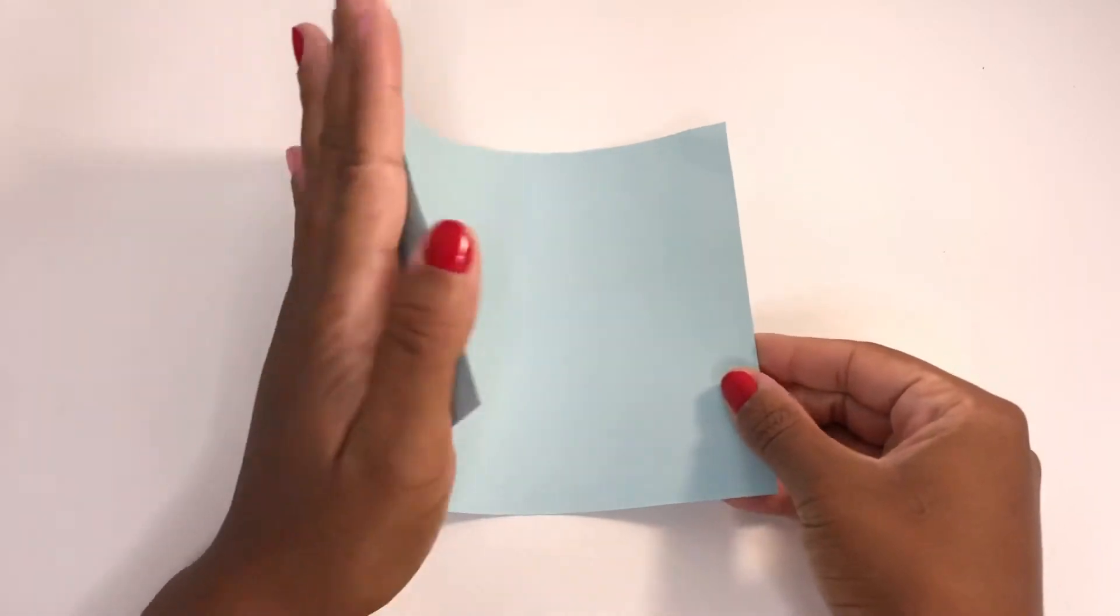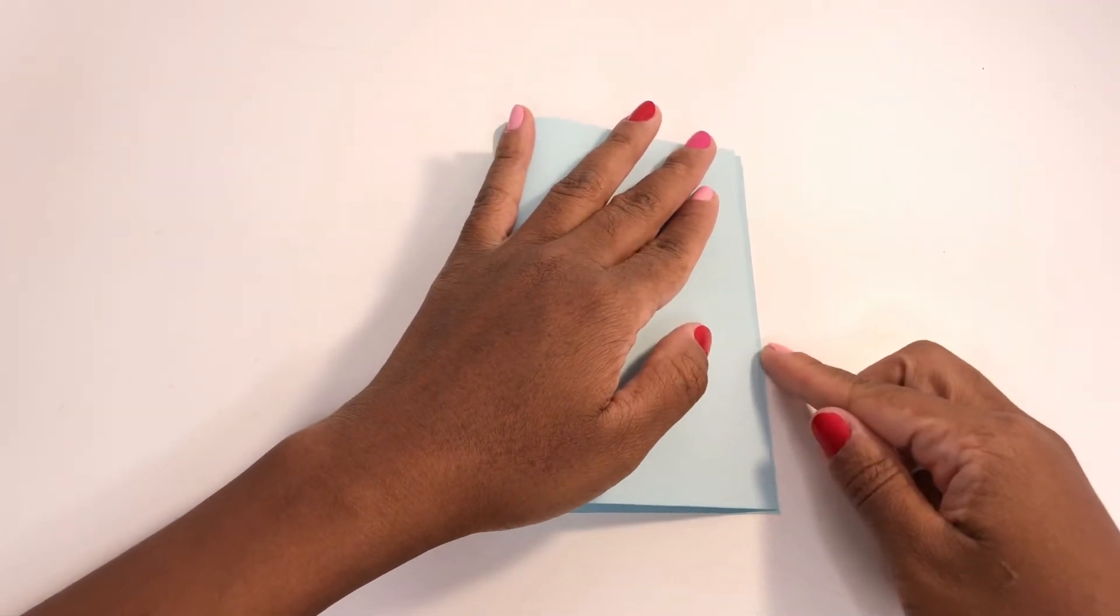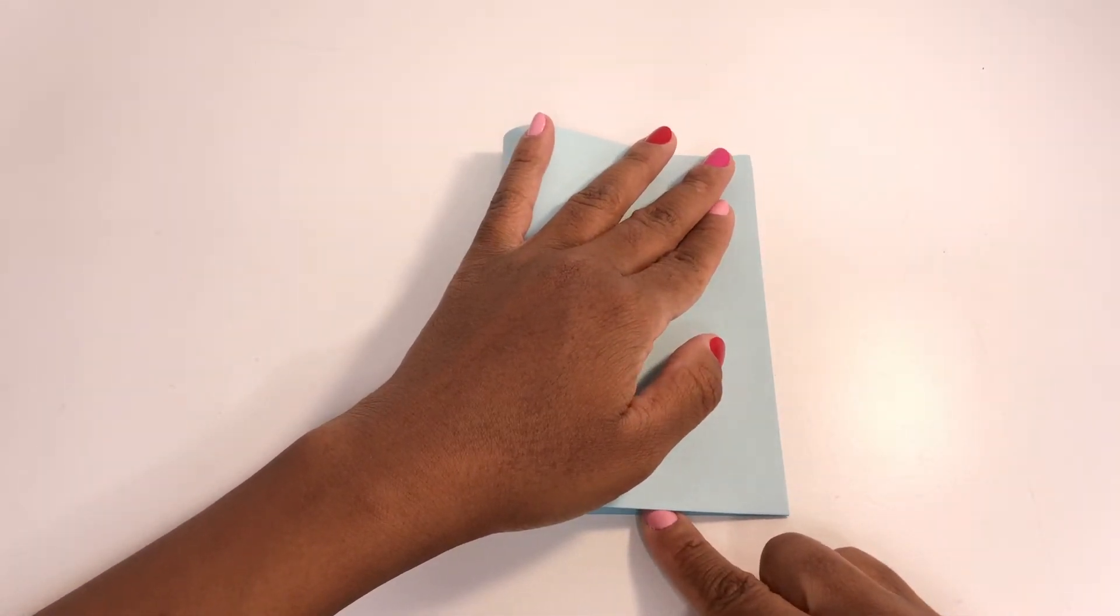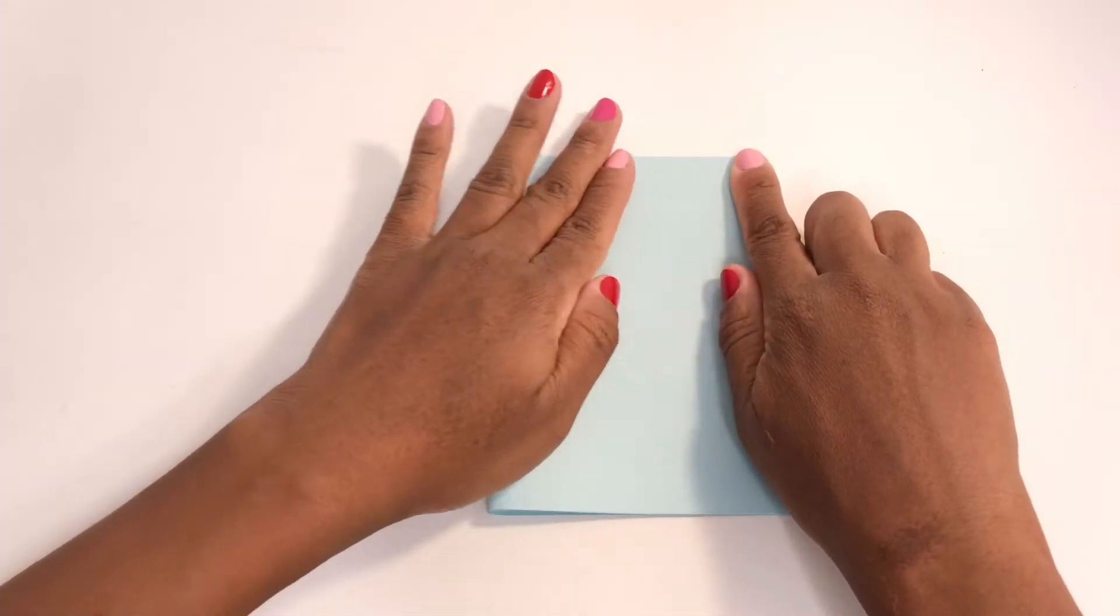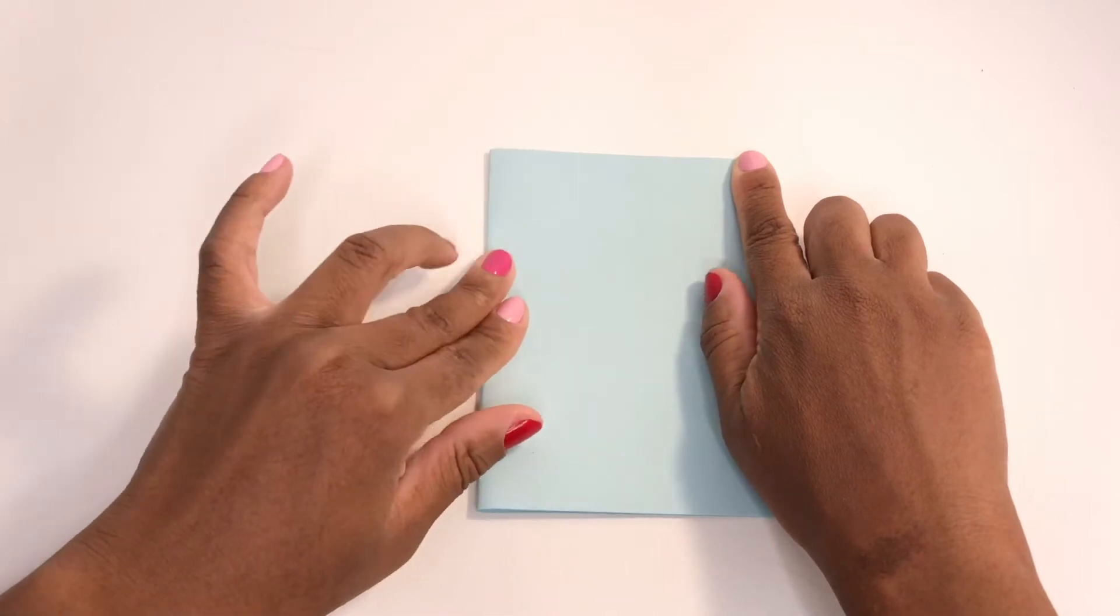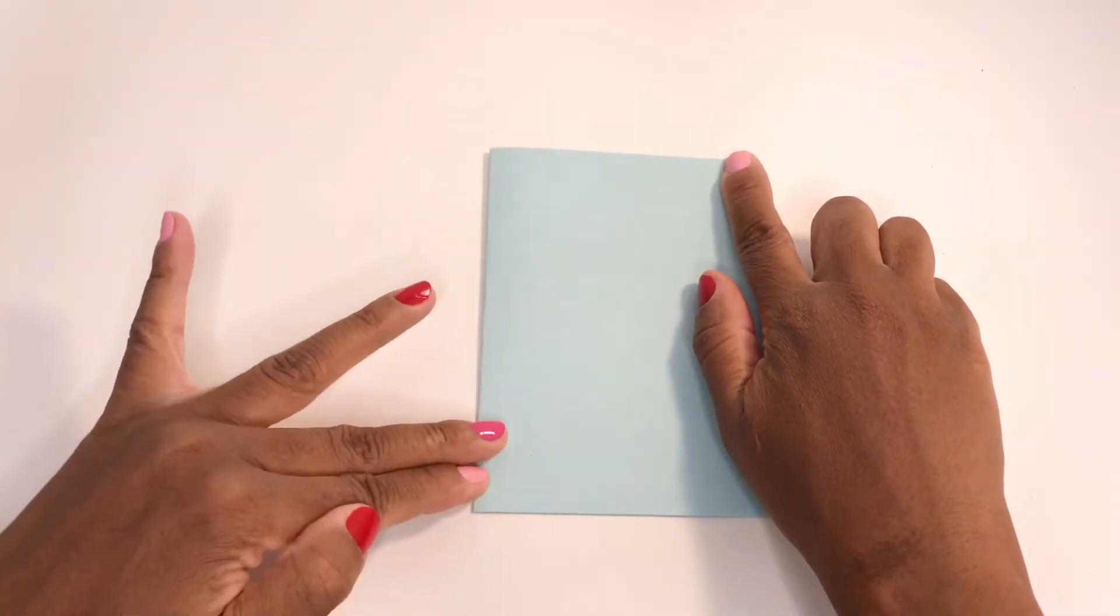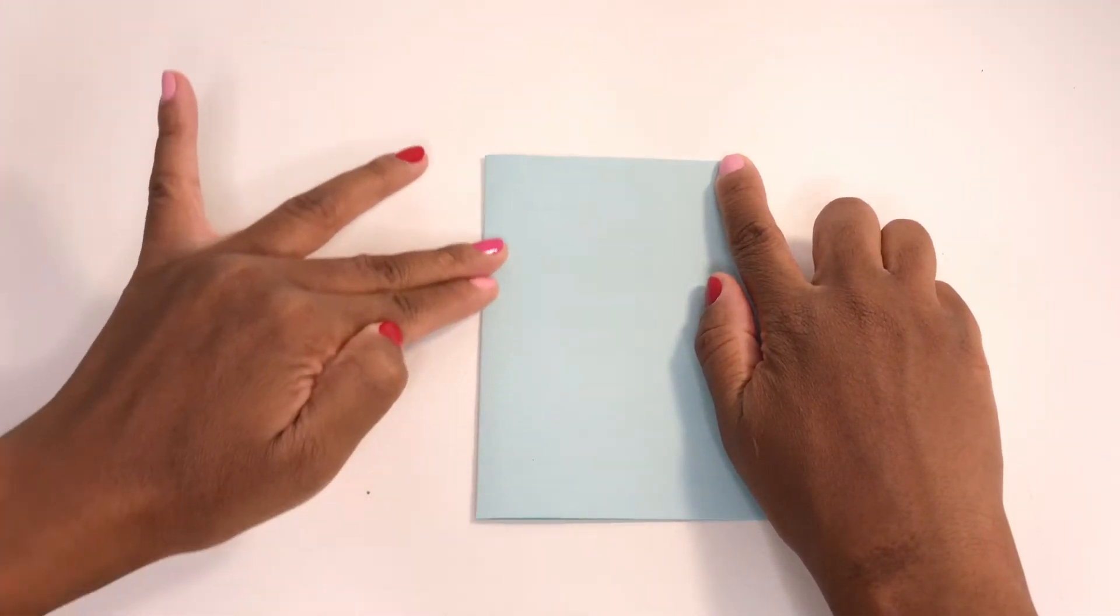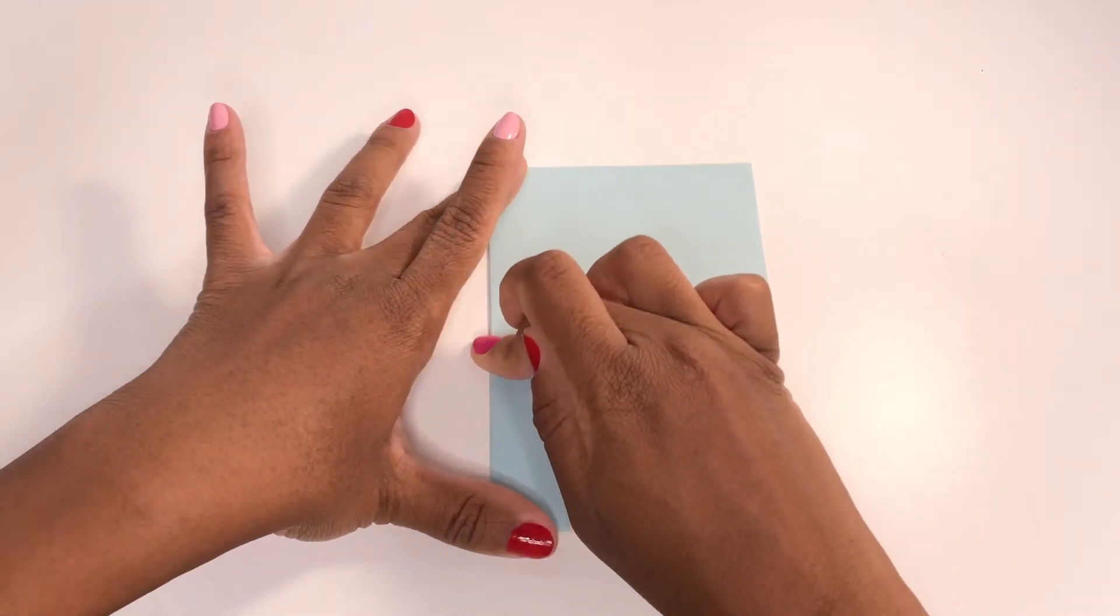So let's get started. The first thing that you want to do is get your card stock in whatever color that you want and you're going to fold it over—very simple. But the key here is to go slowly. You don't want to create a crease in your card stock and have to redo it because it's not aligned properly. When you're creating the crease for the binding, make sure it's as flat as possible so we get a nice clean binding.